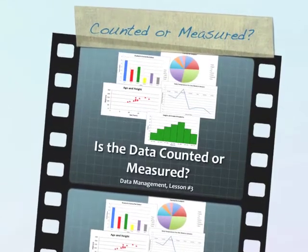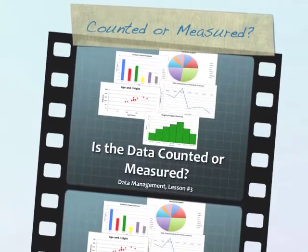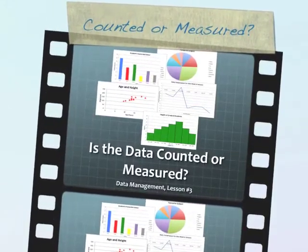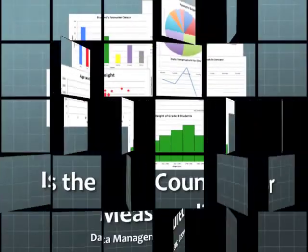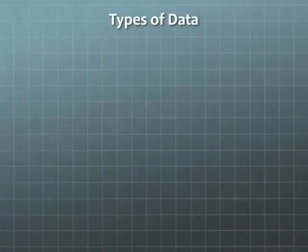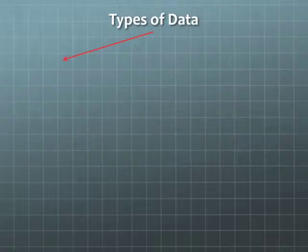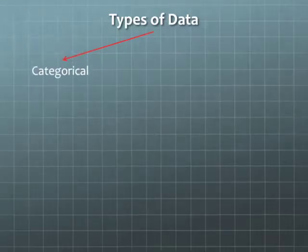In this lesson, we are going to consider the question: is the data counted or measured? When we consider this question, there are two types of data for us to think about. One type is called categorical data, and the other is called numerical data.